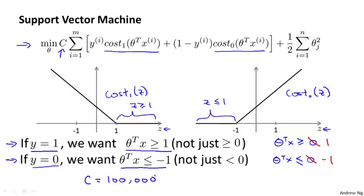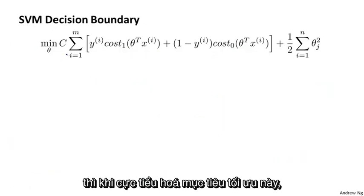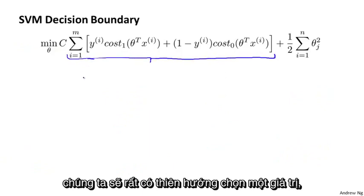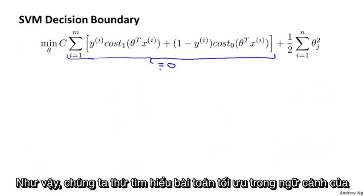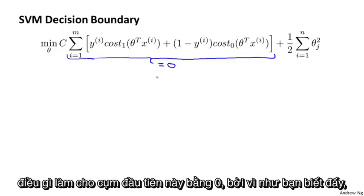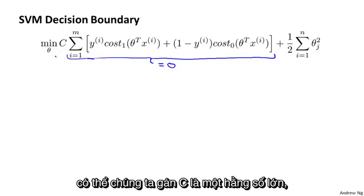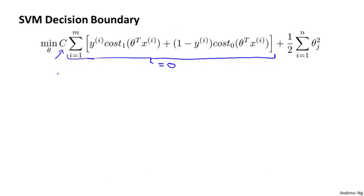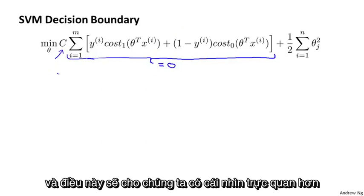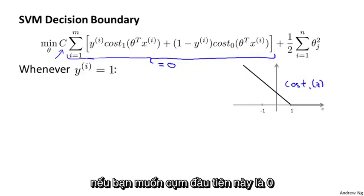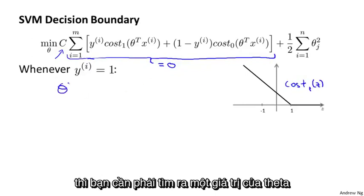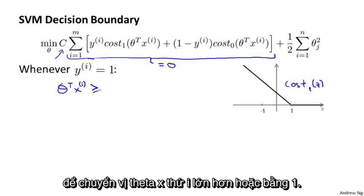If C is very large, then when minimizing this optimization objective, we're going to be highly motivated to choose a value so that the first term is equal to zero. So let's try to understand the optimization problem in terms of what it takes to make that first term zero. We saw already that whenever you have a training example with a label y equals one and you want to make that first term zero, you need θᵀxᵢ to be greater than or equal to one.